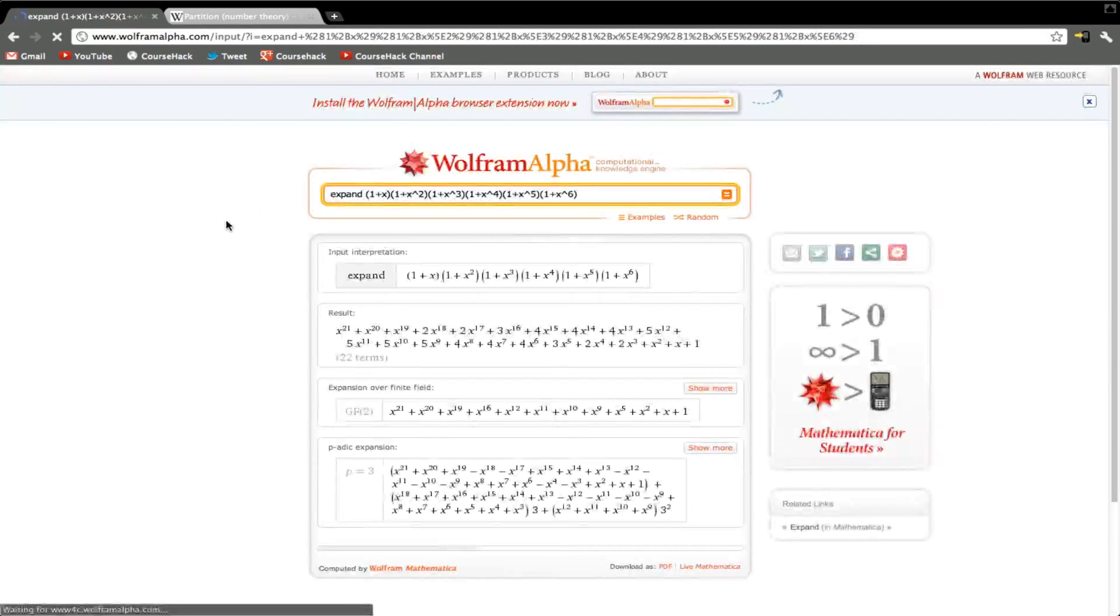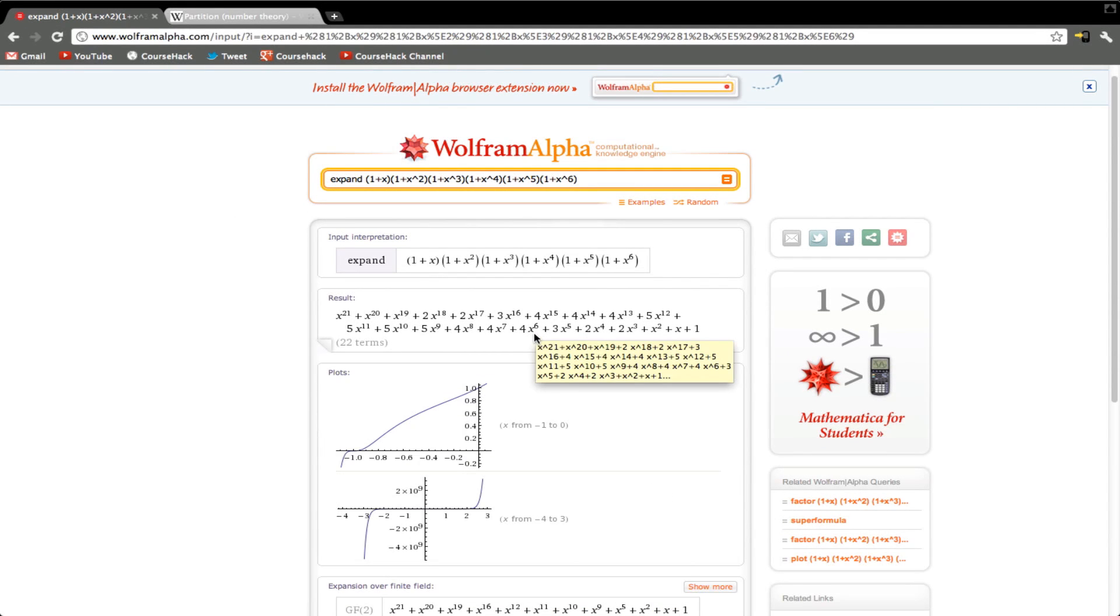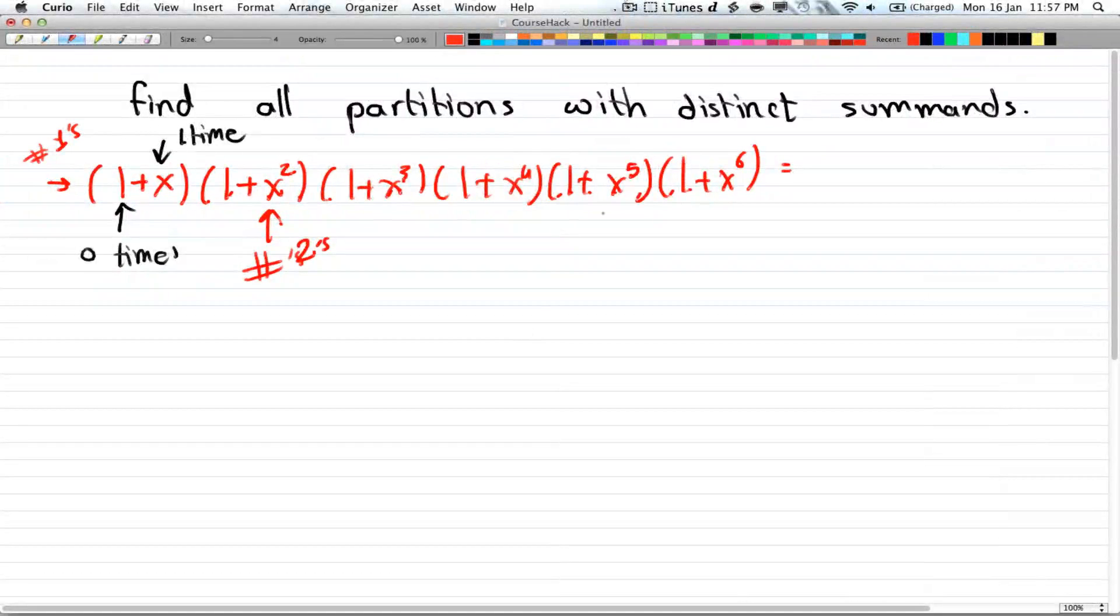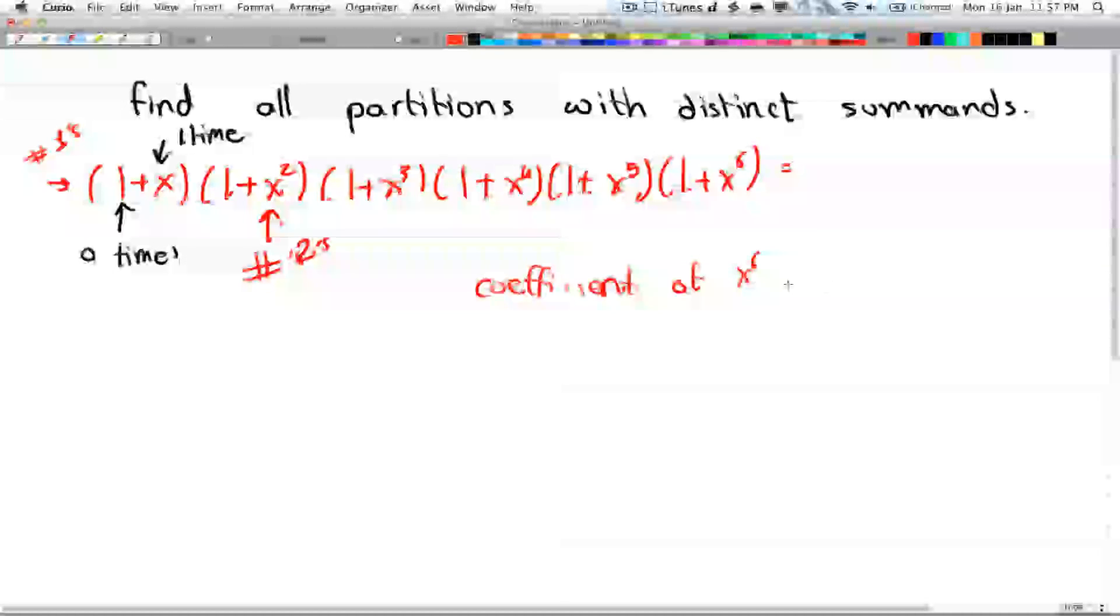Alright, and now we look at the coefficient of x to the power of 6, and that will give us 4. Alright, so that's what WolframAlpha gave us. So the coefficient of x to the 6th is equal to 4.